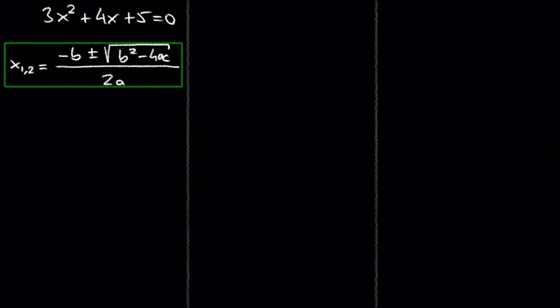Negative numbers under the radical cannot be solved with real numbers, so they have no solution with real numbers. But after learning in my last 5 videos what complex numbers are and how to solve radicals with negative numbers under them, we are now able to solve quadratic equations which have a negative number under the radical in the quadratic formula.